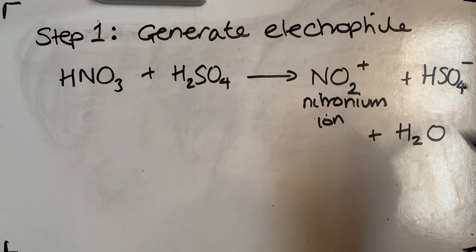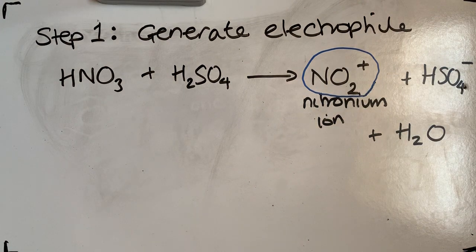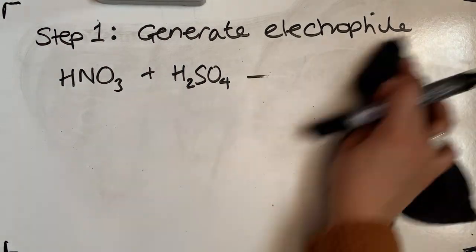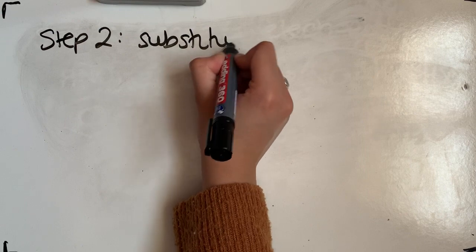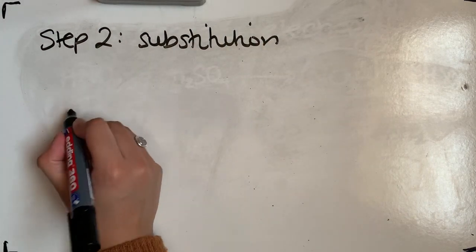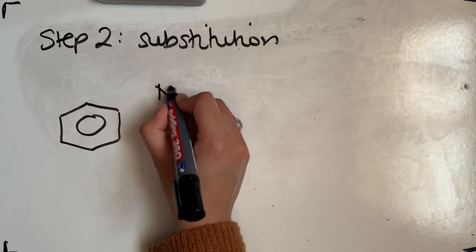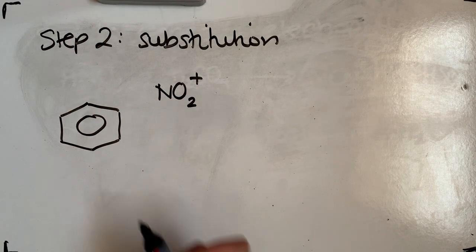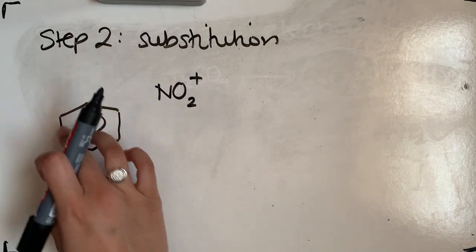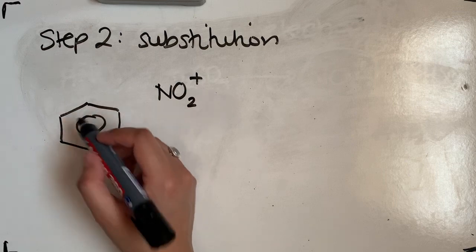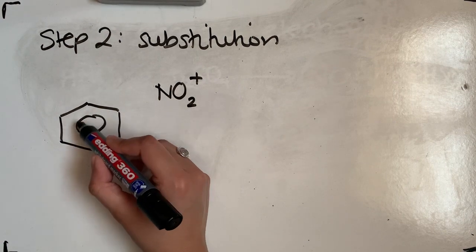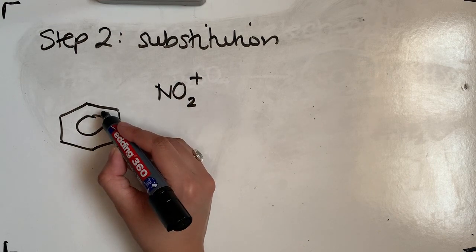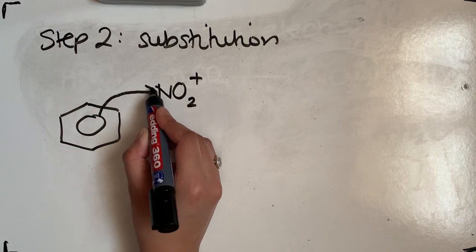Now that we have generated our electrophile, we move to step two: where the substitution occurs. We have the benzene ring and the nitronium ion NO₂⁺. The ring in the middle represents six delocalized electrons, so it's electron rich, while the electrophile is electron poor. A curly arrow shows movement of an electron pair from that delocalized ring towards the NO₂⁺, and the curly arrow should always start from the delocalized ring going to the electrophile.